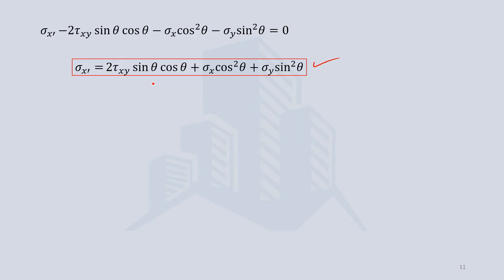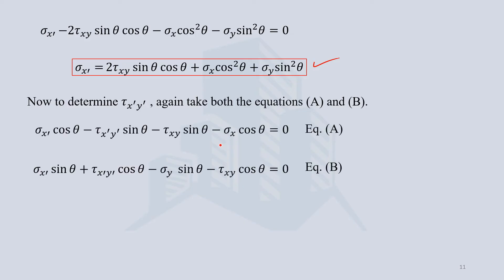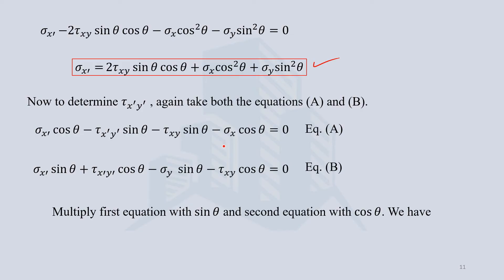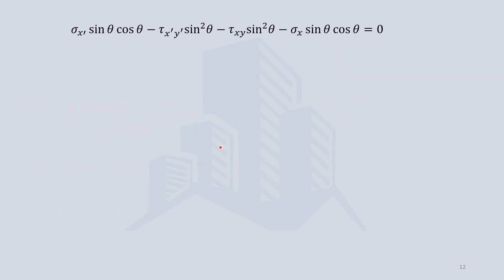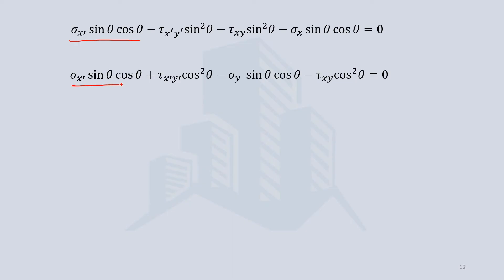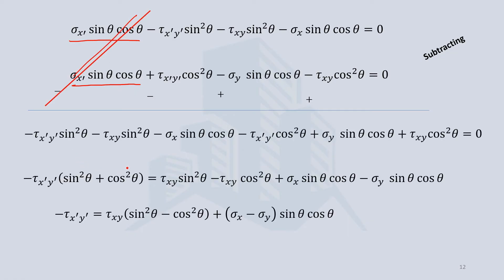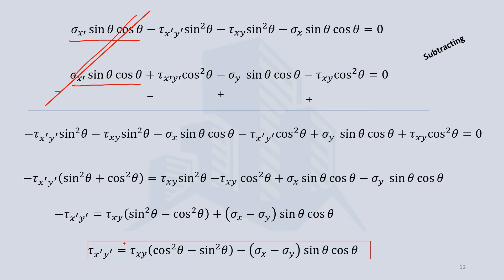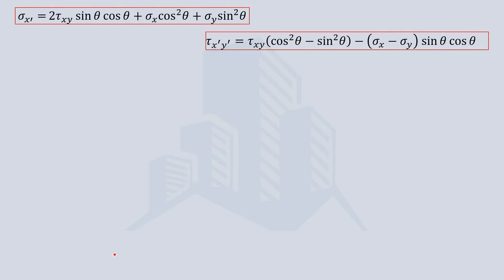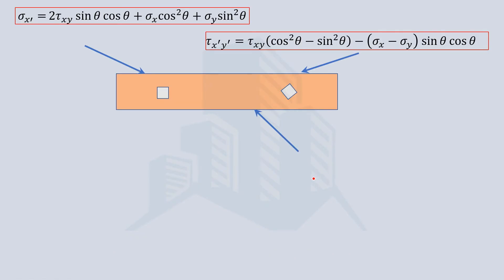To find the shear stress on the x-dash y-dash plane, we use the same two equations again. This time we multiply the first equation by sine theta and the second by cos theta. After doing so, the sigma x-dash terms cancel out. Simplifying further gives us the equation for tau x-dash y-dash in terms of the known plane stresses.